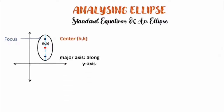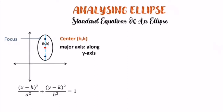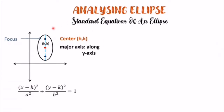So identify natin itong given na ito — sabi natin standard equation of an ellipse. Kamukha ng parabola, yung equation din niya nagvavary din. For example, in parabola, if it opens upwards or if it opens sideways, magkaiba yung ginagamit na equation — nagvavary yung equation. The same with analyzing ellipse. Yung ellipse ay oblong type or oval type — hindi siya circle. Pwedeng mas mahaba siya vertically or horizontally: pwedeng mas mahaba siya in x-axis at shorter sa y-axis, o kaya longer siya sa y-axis at shorter sa x-axis.